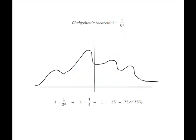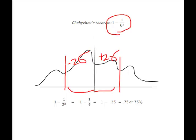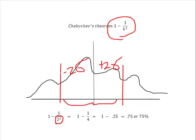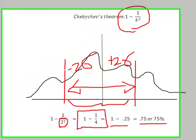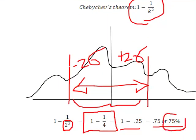Applying the theorem with K equal to 2, I plug into the formula: 1 minus 1 over 4 equals 1 minus 0.25, which is 75%. So for a non-normal distribution, plus or minus two standard deviations from the mean will identify at least 75% of my data. That's a brief overview of the second set of measures of variability.